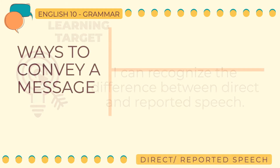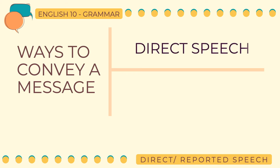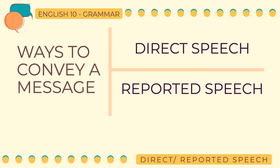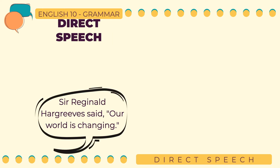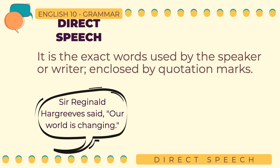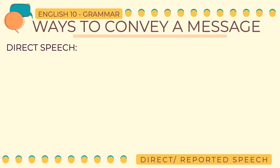Going back to our work plan, we will first identify two ways to convey a message. Here are sample sentences for the two ways of conveying a message. 'Sir Reginald Hargreaves said, our world is changing,' is an example of conveying the direct speech of the speaker. This way makes use of the exact words of the speaker. Therefore, the words are enclosed in quotation marks.